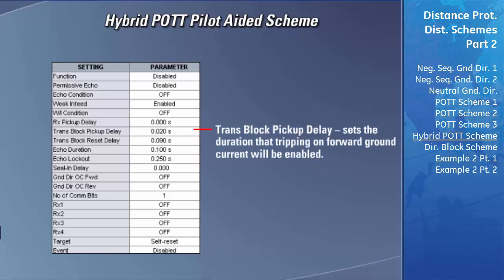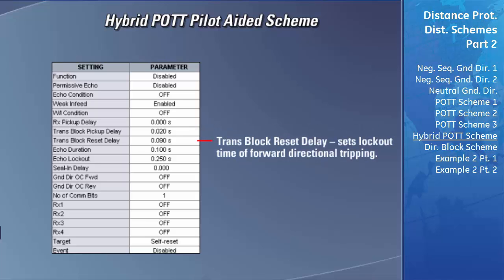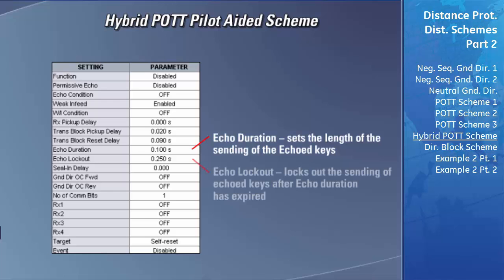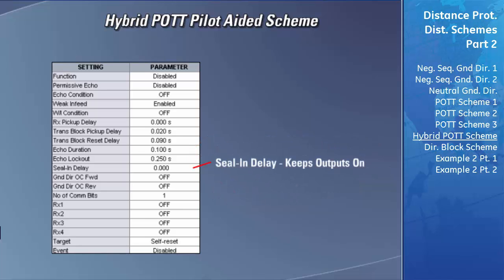Just as in the POTT scheme, the transient block pickup delay sets the time period within which the local relay will be allowed to trip after receiving the hybrid POTT key. If this delay expires before the local relay detects forward ground current, the hybrid POTT will not signal the breaker to trip. The transient block reset delay will lock out the ability to trip on forward ground current once the hybrid POTT key has been removed. Once this timer expires, any new hybrid POTT keys will allow tripping of the D60 on forward directional overcurrent. The echo duration field defines how long the local relay will send the echoing of the hybrid POTT keys. The echo lockout field locks out resending of the echoed hybrid POTT keys once the echo duration timer has expired. The seal in delay keeps the outputs of the hybrid POTT scheme on long enough to trip the breaker.